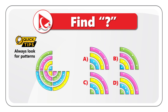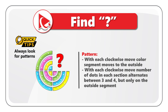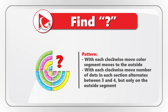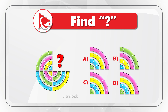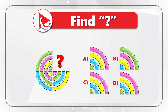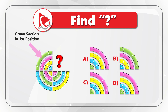If you're a frequent visitor to this channel, you're well aware that to solve these types of challenges you need to understand the pattern. The pattern here is that with each clockwise move, a color segment moves to the outside. For three segments visible on the screen, let's assign clock values: 5 o'clock, 7 o'clock, and 10 o'clock. Looking at the green section at 5 o'clock — when we move to 7 o'clock, it becomes second from the outside, and at 10 o'clock, it becomes the most outside section.